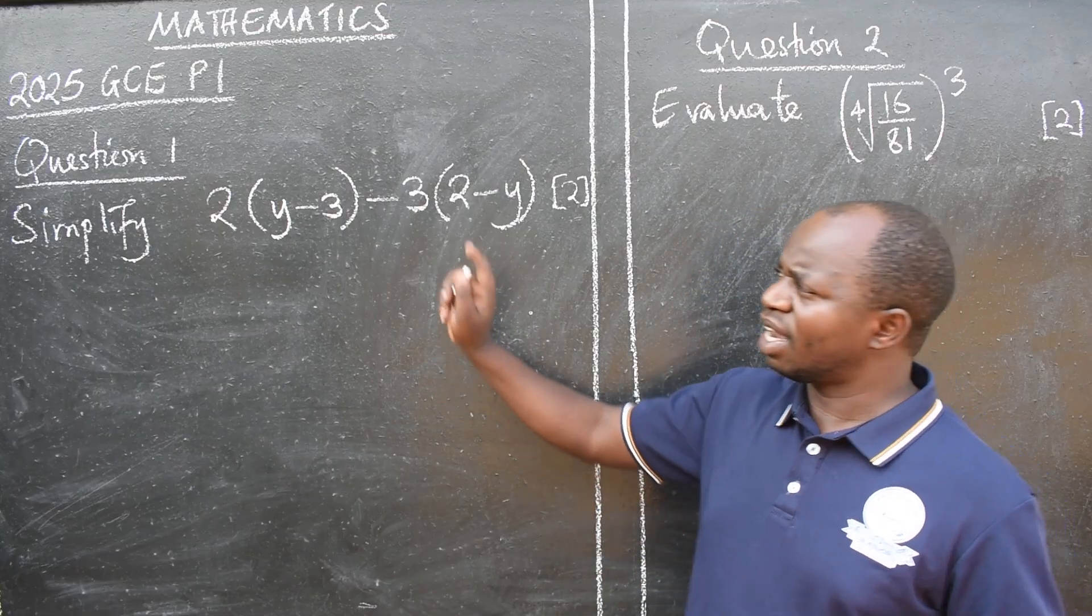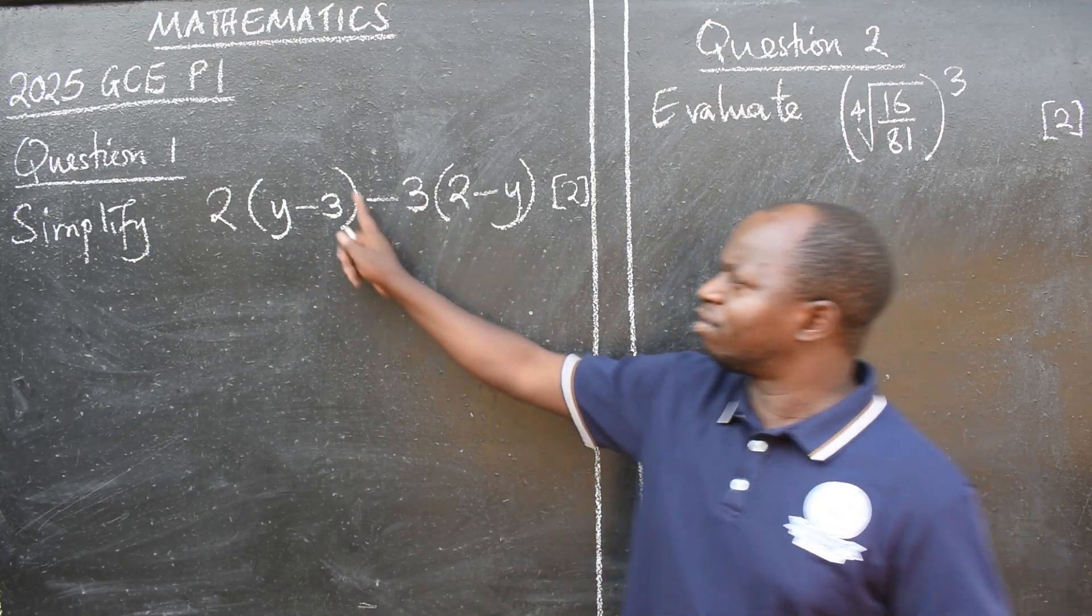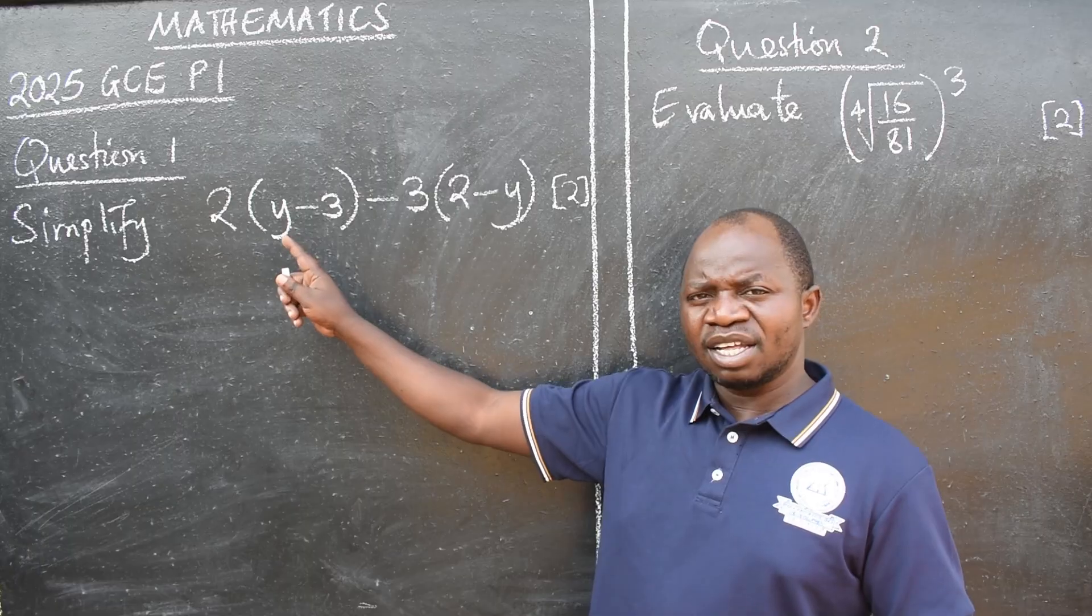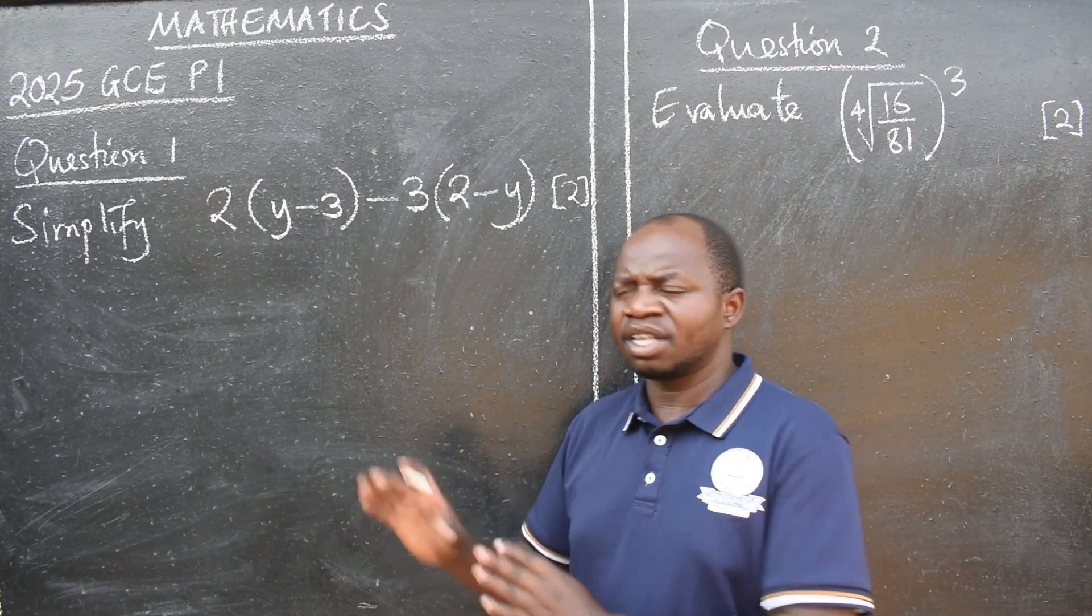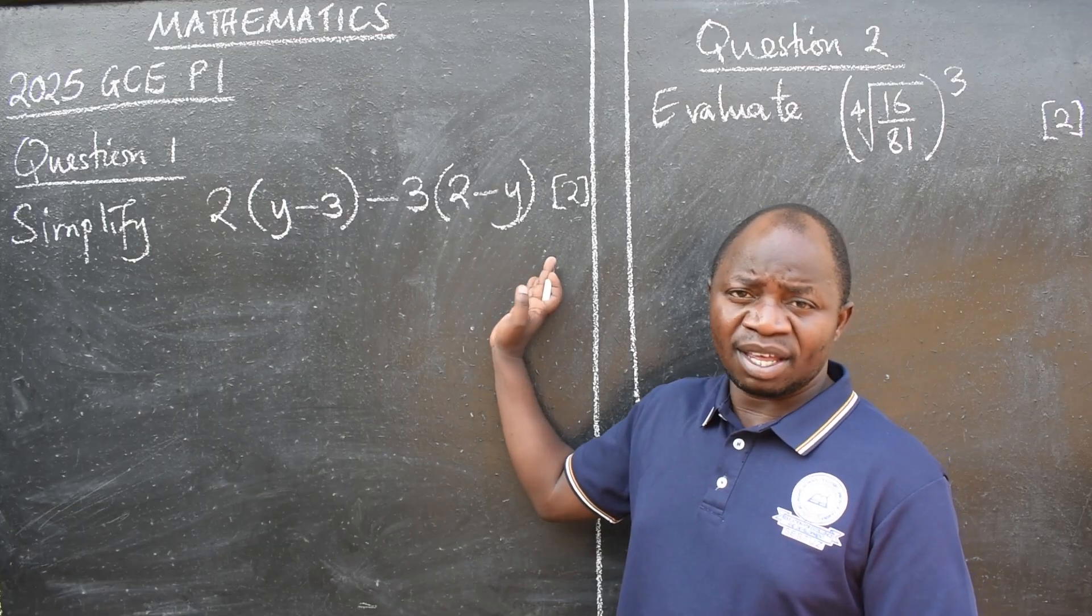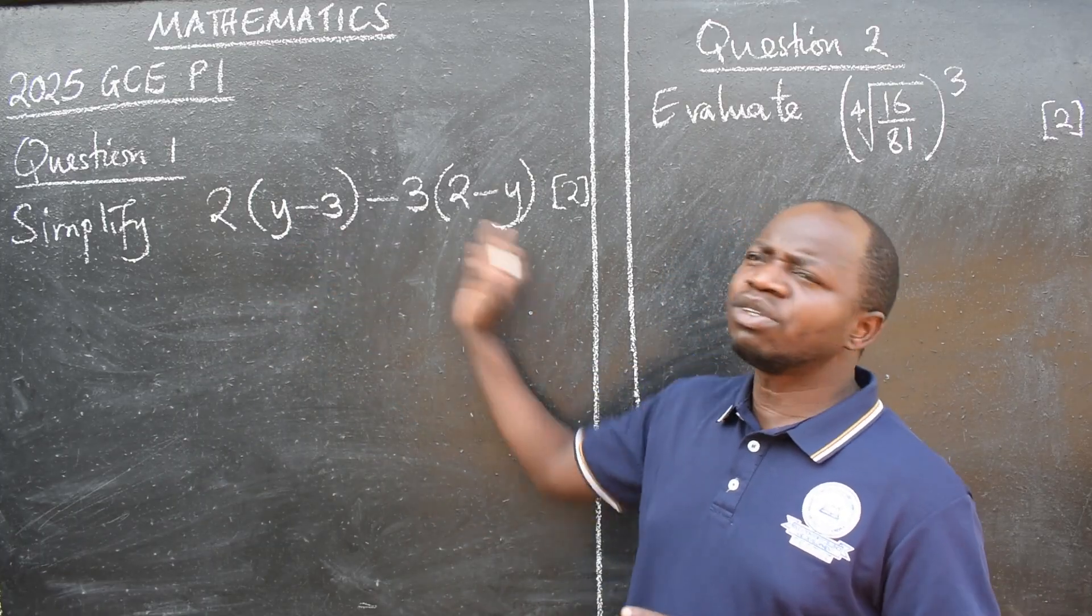Now, you have to look at the given expression so that you are guided where you are supposed to start from. In this case, in the expression, we have brackets. Then we are saying, start from there. Start from removing these brackets. That is our starting point.